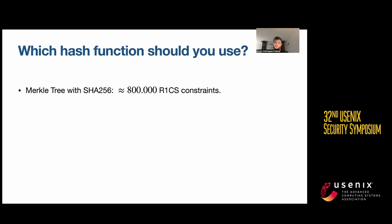As an example, if you use a Merkle tree with 2 to the 32 leaves and SHA-256 as your hash function, then you end up with about 800,000 constraints in a rank one constraint system. While if you use something like Pedersen hash function, then you can get down to 45,000 constraints.